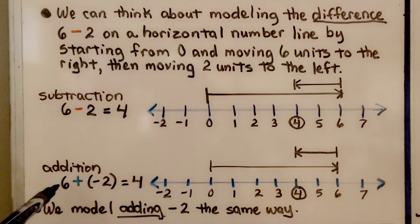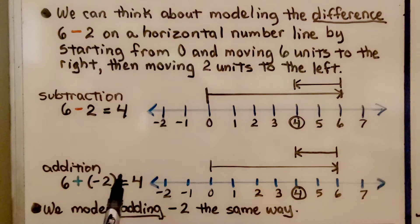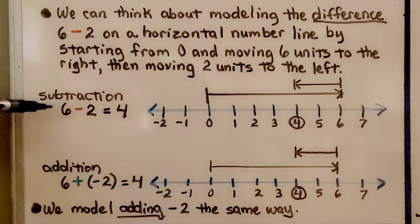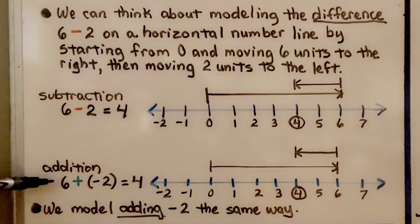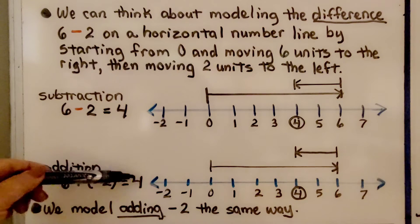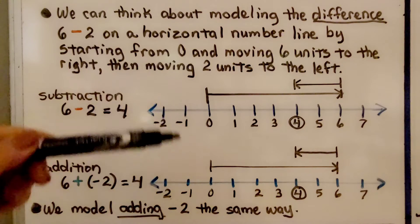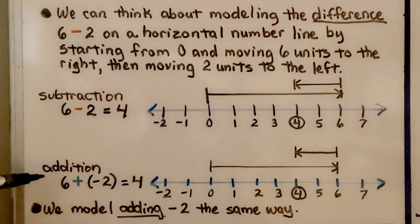For addition, we can do 6 plus a negative 2. We start from 0, go to 6 for our positive 6, then add a negative 2 and come back to 4. Notice that 6 minus 2 equals 4, and 6 plus a negative 2 also equals 4. We model adding negative 2 the same way on a number line as subtracting a positive 2.